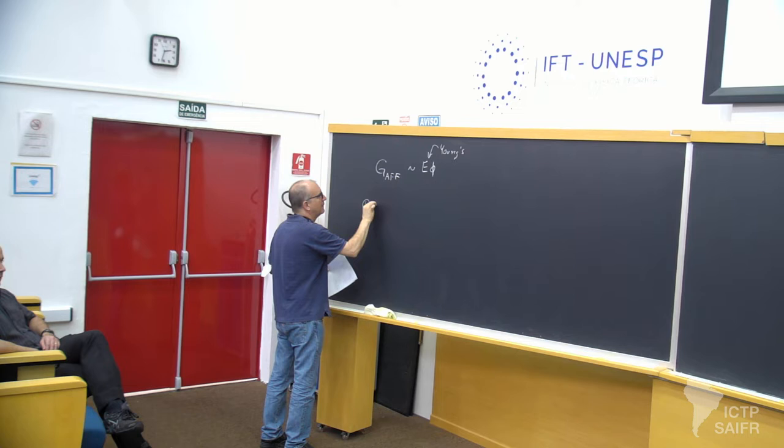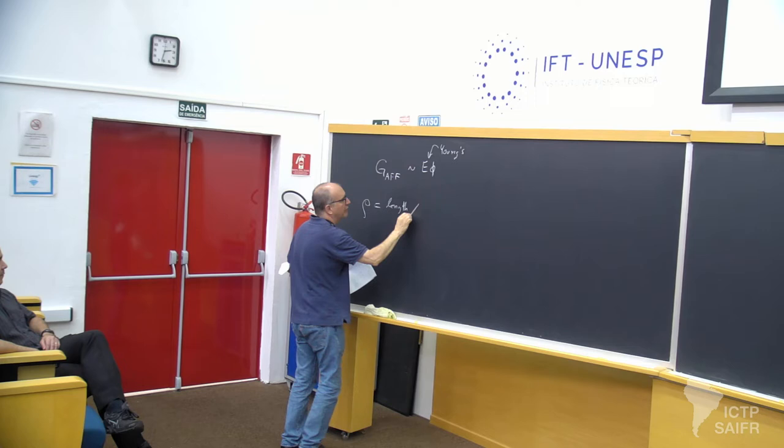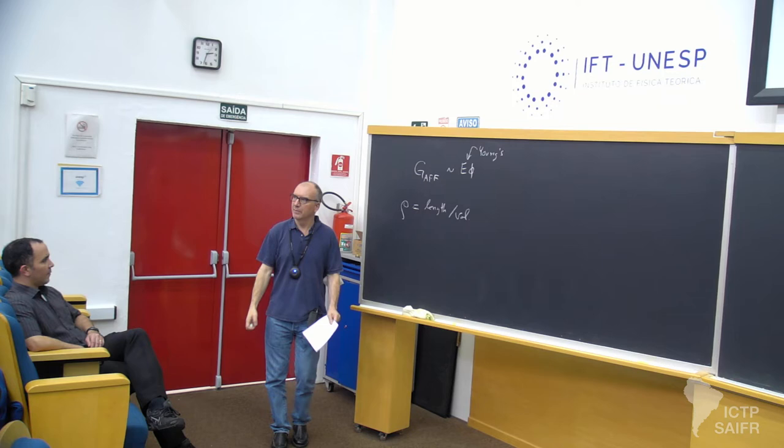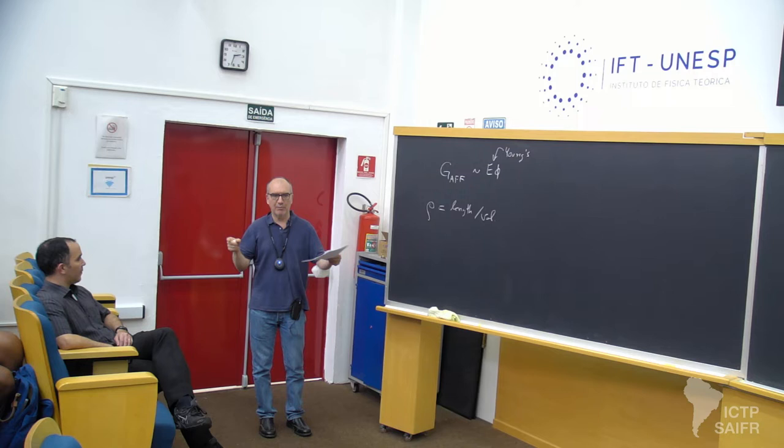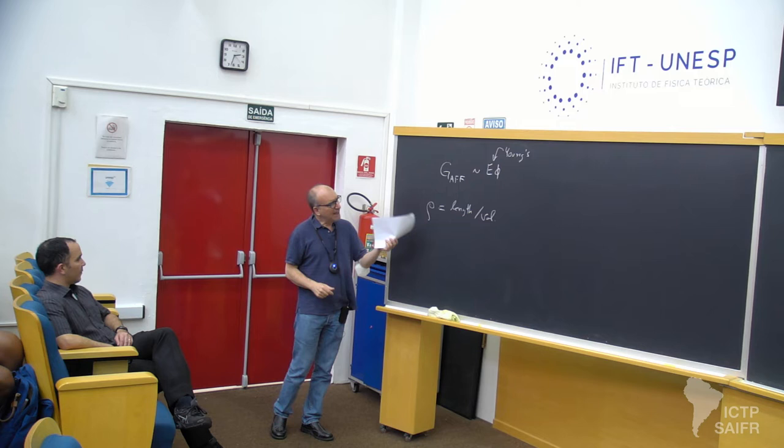I also want to think about a different way of characterizing the concentration of fibers. Another measure of concentration, which turns out to be useful, I'll call rho — it's the length per volume. Literally, take all the fiber in your system, connect it end to end, calculate the full length, and divide by the volume of the sample. Not mentioning anything about the lengths of the fibers; this is just a measure of length per volume.